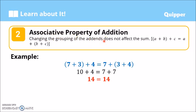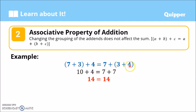At one glance, parang kagaya lang ng commutative property, pero hindi talaga. Notice that we still have the same order: 7, 3, 4 on both sides. Yung nag-iba lang is the grouping — dito, ang group ay 7 plus 3; dito naman, ang nakagroup ay 3 and 4. Kung commutative yan, it would be something like 7 plus 4 plus 3. So yung order ng numbers ay nagbabago sa commutative property, whereas sa associative property, it's the grouping that changes.